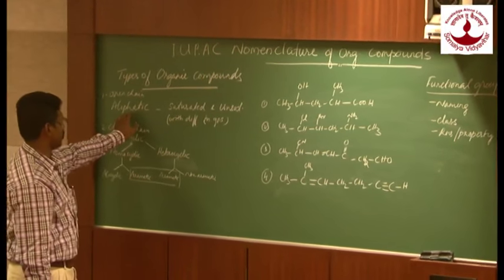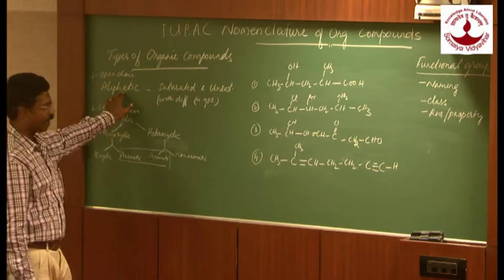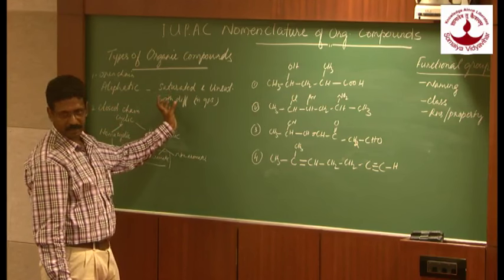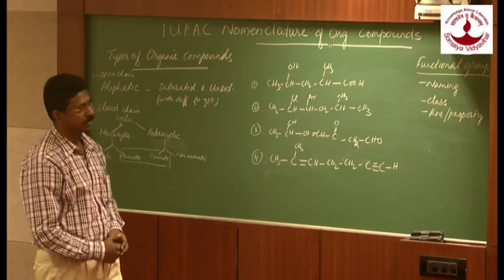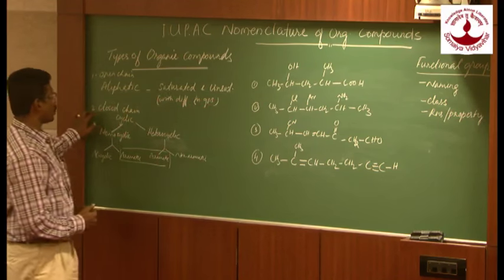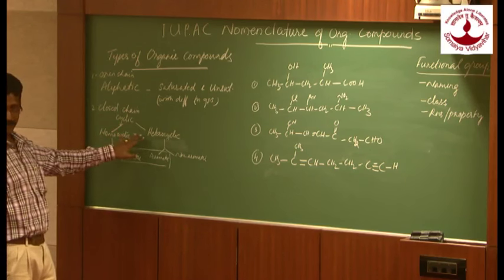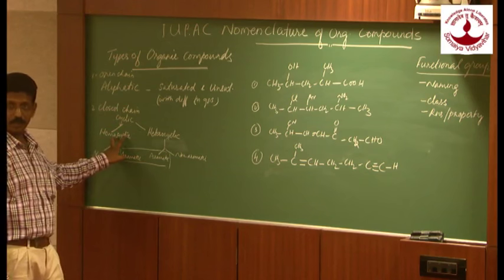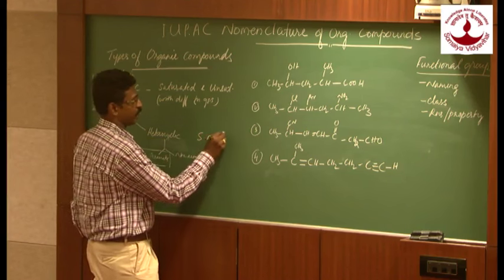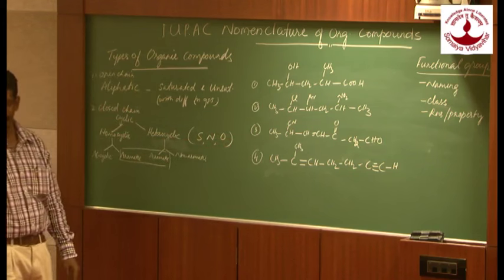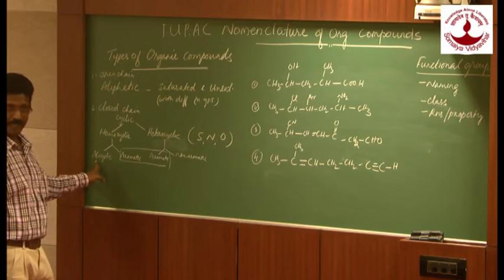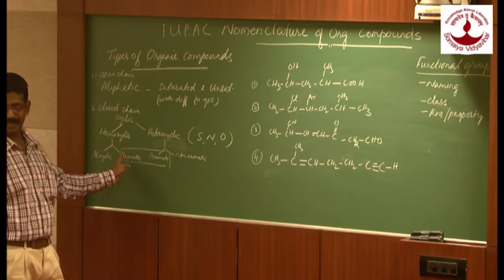In open chain compounds there are aliphatic compounds. Aliphatic compounds can again be saturated and unsaturated. In saturated, there will be alkane series hydrocarbons, and unsaturated contains carbon-carbon double bonds and triple bonds — alkenes and alkynes. There are also closed chain compounds, which we call cyclic compounds. These can be homocyclic, which contains only carbon in the skeleton, and heterocyclic, where hetero atoms like sulfur, nitrogen, and oxygen are present in the skeleton of the ring. Homocyclic can again be two types: alicyclic (aliphatic but cyclic) and aromatic, like benzene and its derivatives.